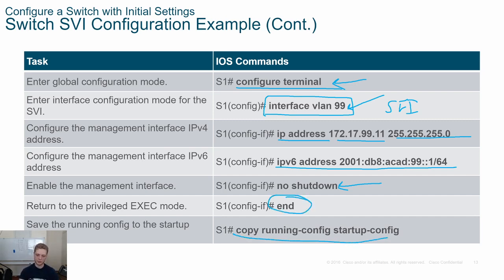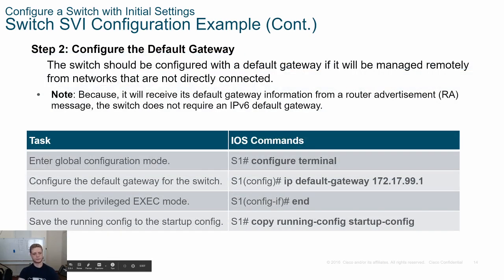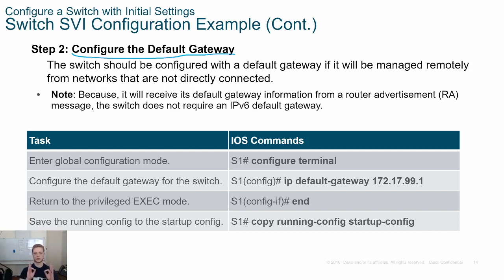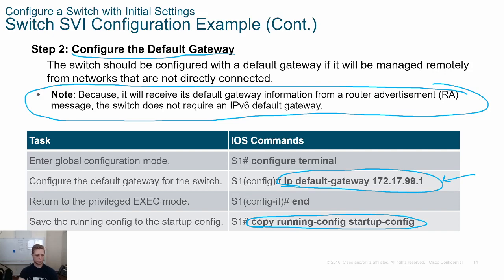Then 'end' to get out, and of course save your configuration with 'copy run start' — if we don't save it, the switch will reboot and we'll lose everything. You also usually need a default gateway. If you're remoting in from home or from another side of a router, you need to set this. We receive default gateway information in IPv6 automatically, so we don't need to worry about that for IPv6. However for IPv4, we need the 'ip default-gateway' command, which tells us how to get off our network and onto another network.